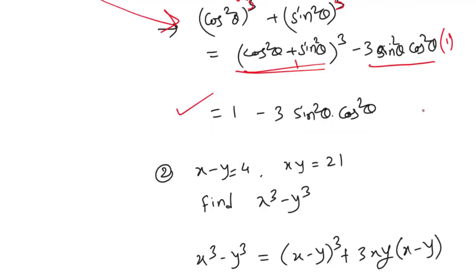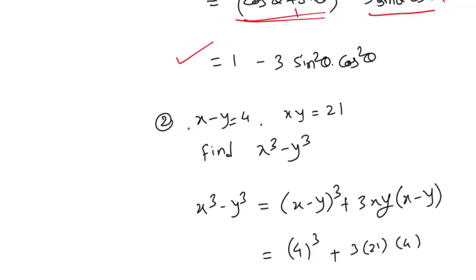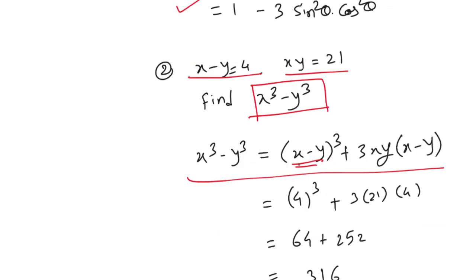Let us have a look at the second example, where they have given x-y and xy, and we have to find x³ - y³. Again, we can use the above formula: x³ - y³ = (x-y)³ + 3xy(x-y). All the values are given, so we can put these values in and finally get the answer as 316.